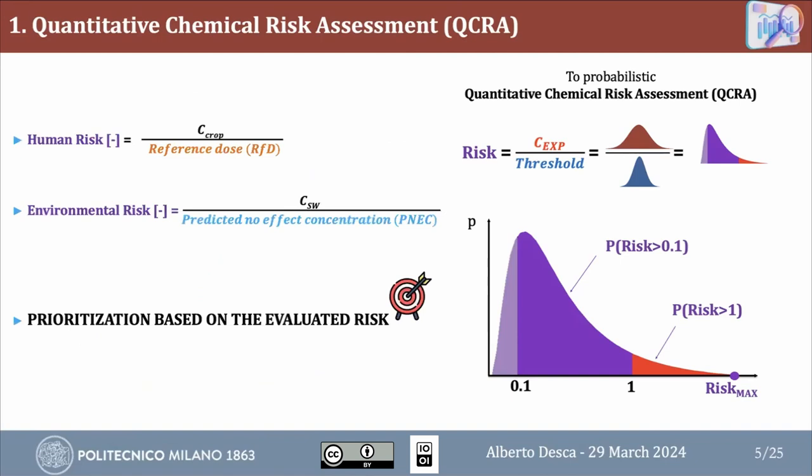Here are reported the two ways to evaluate the two risks — human and environmental. For the human one, we divide the concentration in crops by the reference dose, which is the toxicological parameter used to evaluate human risk. For the environmental risk, we do the same but using the predicted no-effect concentration (PNEC), which has the same meaning as the reference dose but is more focused on the environment. At the end, this procedure prioritizes contaminants based on evaluated risk.